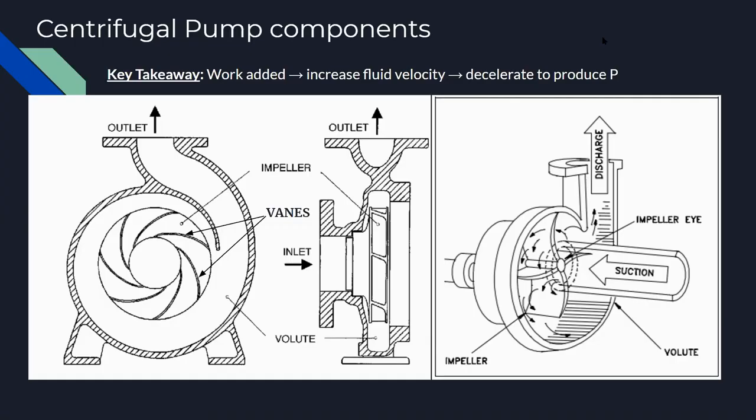Centrifugal pumps consist of three main parts: the impeller, the vanes, and the volute casing. The main point of these pumps is that the impeller does work on the fluid to increase its velocity, and then the casing trades this velocity for pressure.